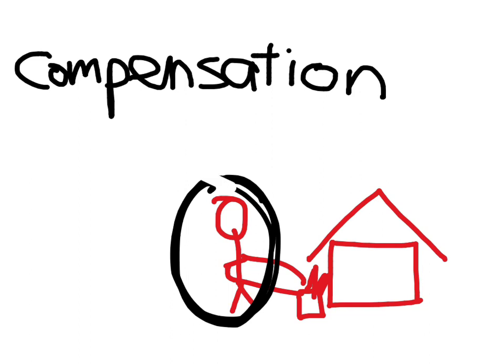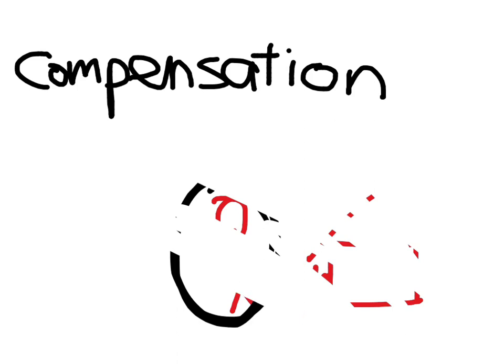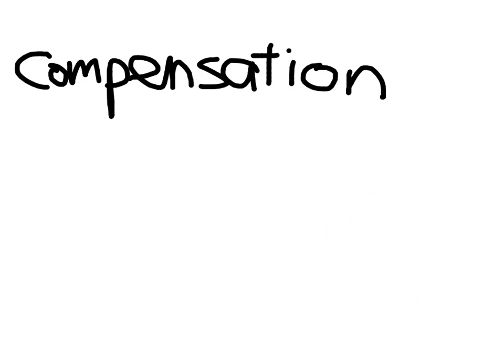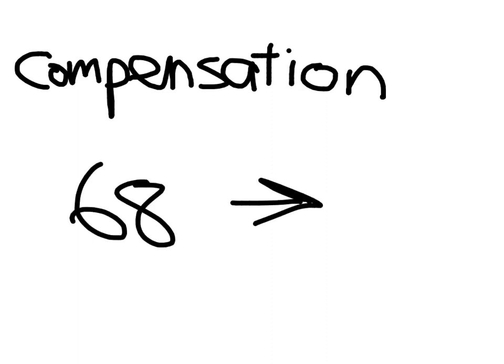When we talk about compensation with maths though, what we're talking about is making a number round to its nearest whole number. For example if we had the number 68 we might compensate that number up to 70, but if we give it 2 we have to take it away later on.